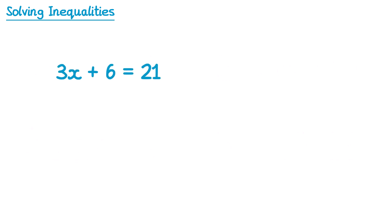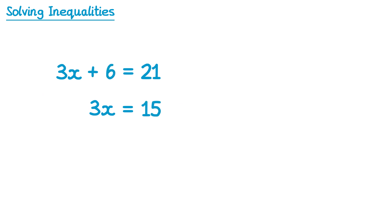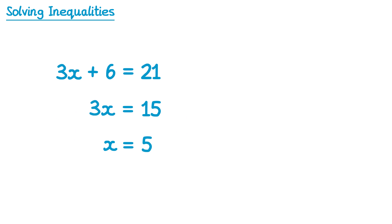This here is an equation because it has an equal sign. To solve this equation, we'd first look at this plus 6 here and subtract 6 from both sides. On the left hand side the 6s will cancel, so we have 3x, and on the right hand side 21 subtract 6 is 15. Then because of this times 3 here, we divide both sides by 3. 3x divided by 3 is 1x, and 15 divided by 3 is 5. So you end up with the solution x equals 5, but this is an equation, and this video is about inequalities.